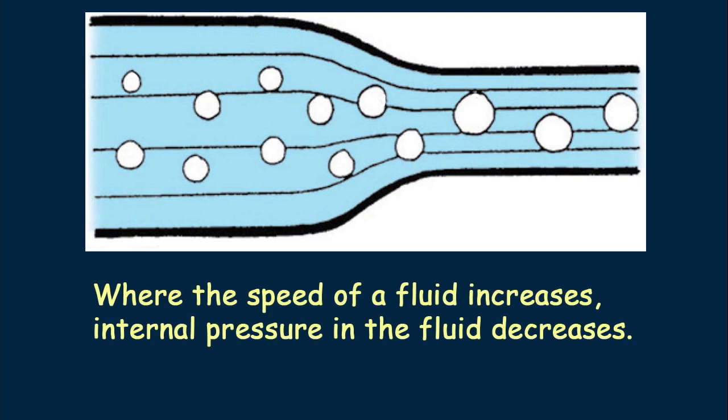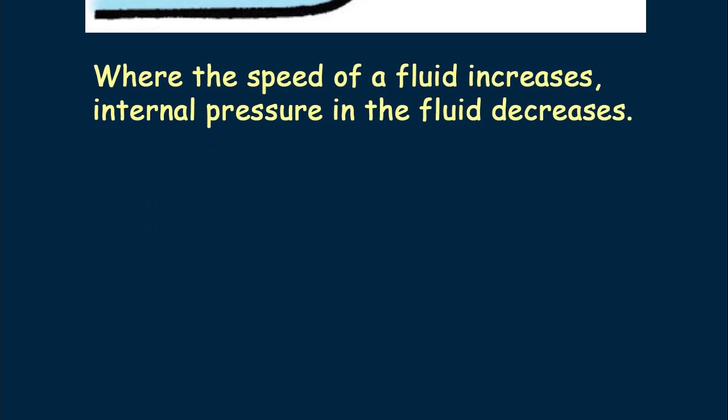Daniel Bernoulli, an 18th century Swiss scientist, studied fluid flow in pipes. His discovery is now called the Bernoulli principle. When the only variables are speed and pressure, the Bernoulli principle is stated as follows: where the speed of a fluid increases, internal pressure in the fluid decreases. And vice versa. Where speed decreases, internal pressure increases.